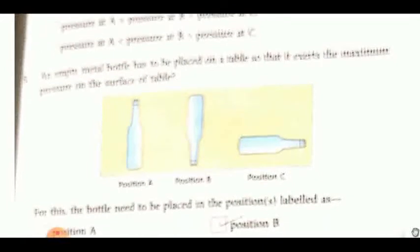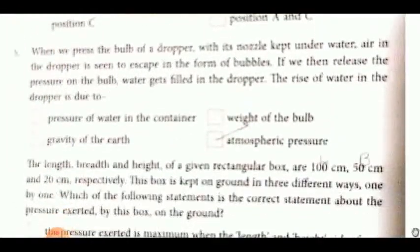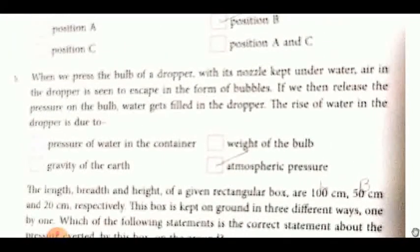Then an empty metal bottle is there. If we place the bottle, in which position will it exert maximum force, maximum pressure? Maximum pressure is applied in minimum area. So which has minimum area - in A, in B, or in C? In C it's maximum. Now if we look at A and B, its base is larger, but compared to its mouth, so position B has the lowest area of contact. So it will have the greatest pressure.